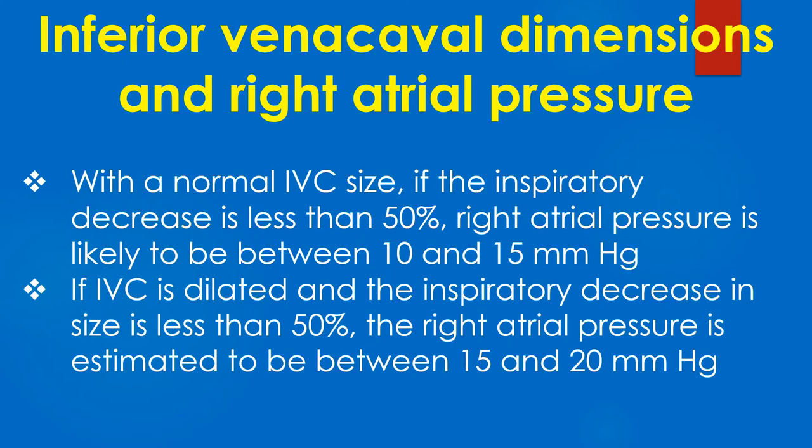With a normal IVC size, if the inspiratory decrease is less than 50%, right atrial pressure is likely to be between 10 and 15 mmHg. If the IVC is dilated and the inspiratory decrease in size is less than 50%, the right atrial pressure is estimated to be between 15 and 20 mmHg.